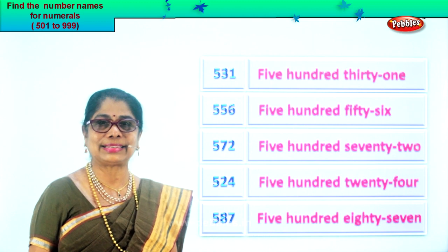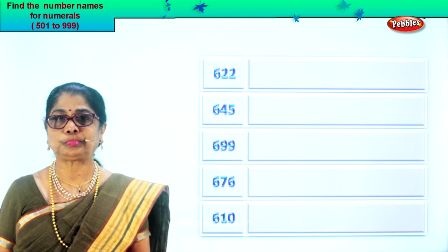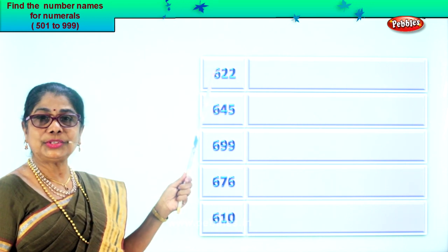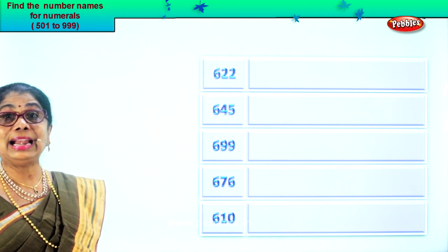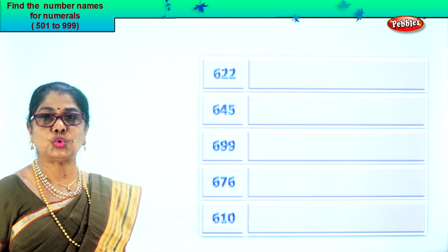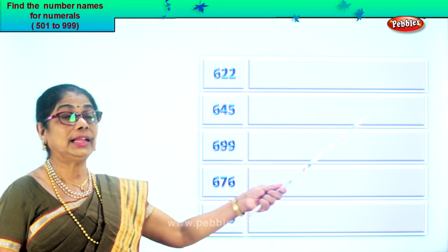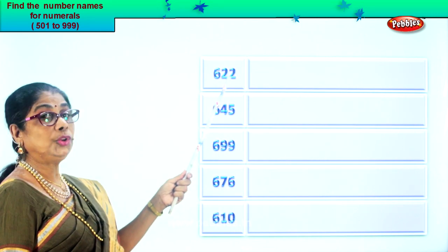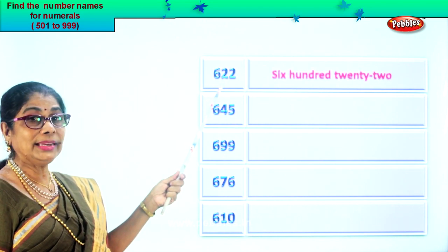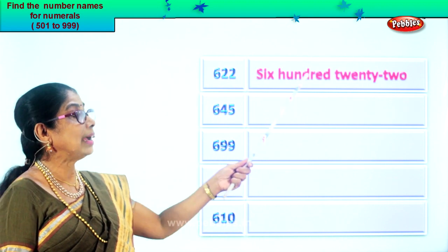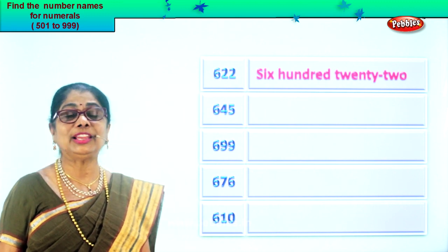Let's take another exercise and learn to write the number names. Look what you have here. We have six, two, two. Two in the ones place, two in the tens and six in the hundreds place. Six hundred twenty-two. So we write six hundred first, then we write twenty-two. Six hundred twenty-two. You know the spelling — you can write anything.